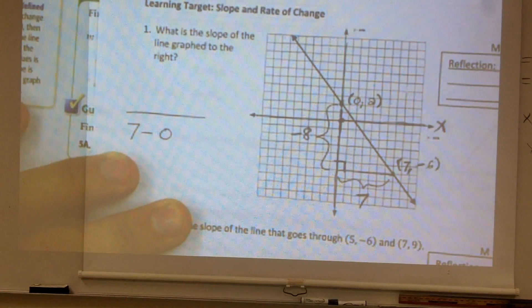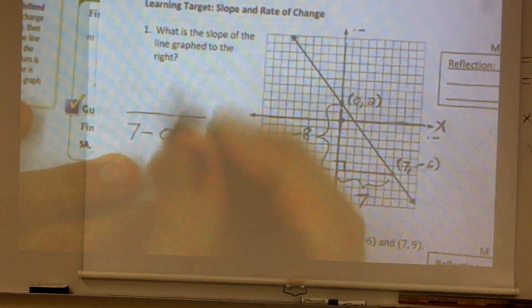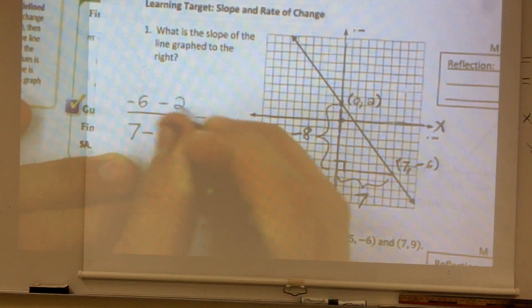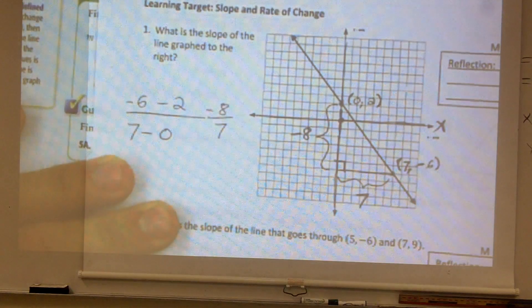So the other way I could say that is now, instead of subtracting my x's from each other, I could say negative 6 minus 2, which is the same thing as negative 8 over 7.